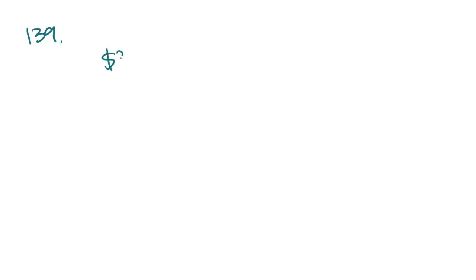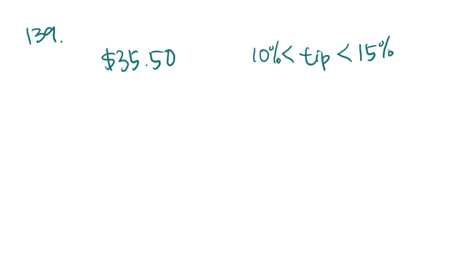Number 139: a restaurant meal cost $35.50 and there was no tax. The tip was more than 10% and less than 15%. The total amount paid must have been between — and then five answer choices each give a range. This is a problem where we figure out what 10% and 15% are and find the range in between. $35.50 is the same as 35.5, so let's multiply by 0.1 and by 0.15.